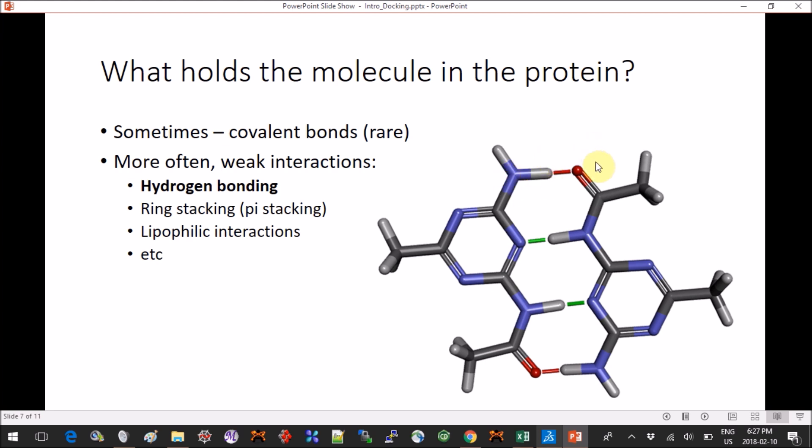So what you will see is just nitrogens and oxygens and you have to figure out where the hydrogens can be and whether or not they can interact in a productive hydrogen bonding.